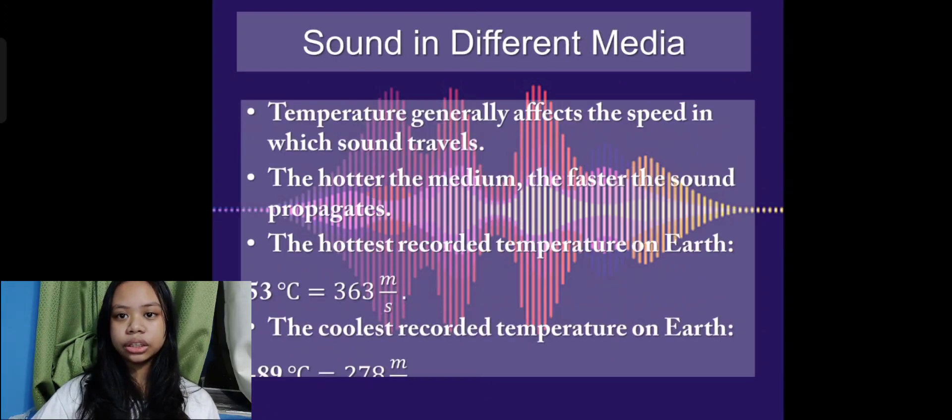Temperature generally affects the speed in which sound travels. That is, the hotter the medium, the faster the sound propagates. In fact, for the hottest recorded temperature on Earth, which is 53 degrees Celsius, the sound will travel at about 363 meters per second.